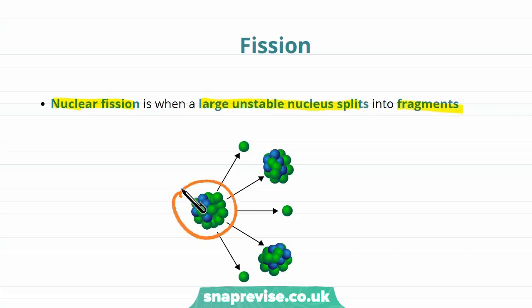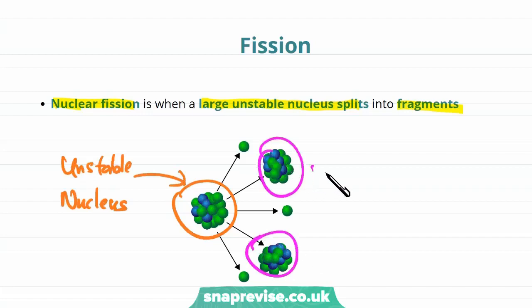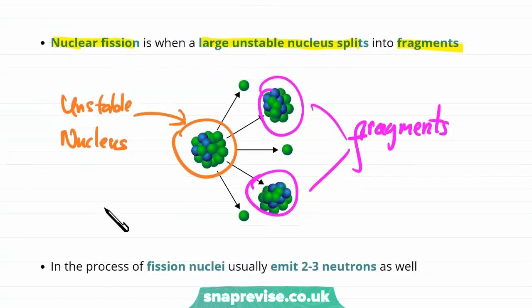So here is our large unstable nucleus and we see that it splits into large fragments. But there's something else going on here as well.